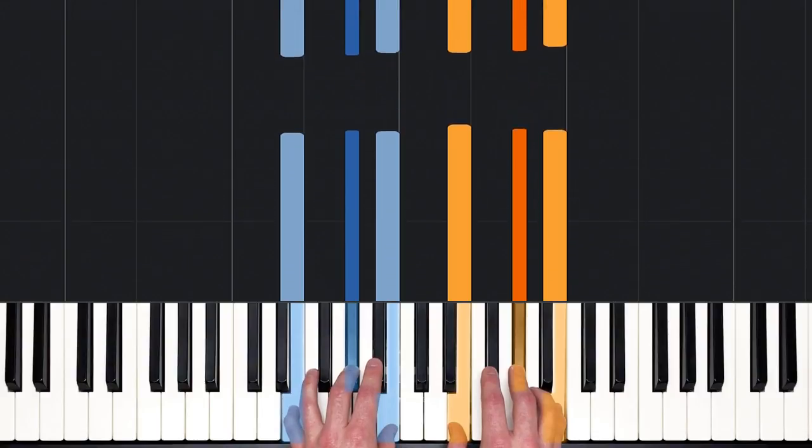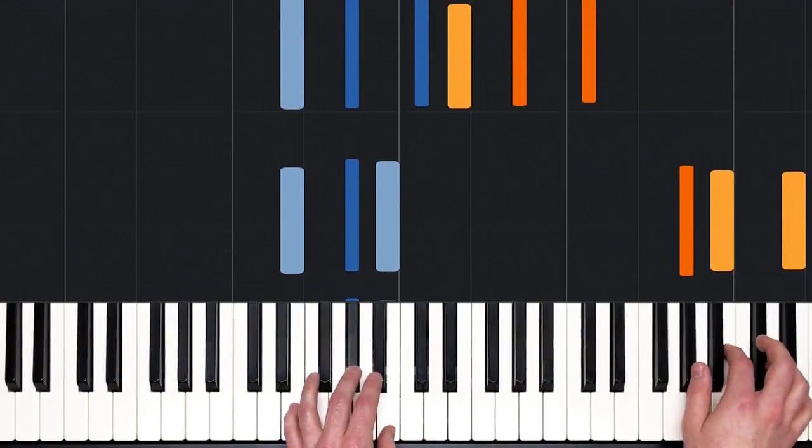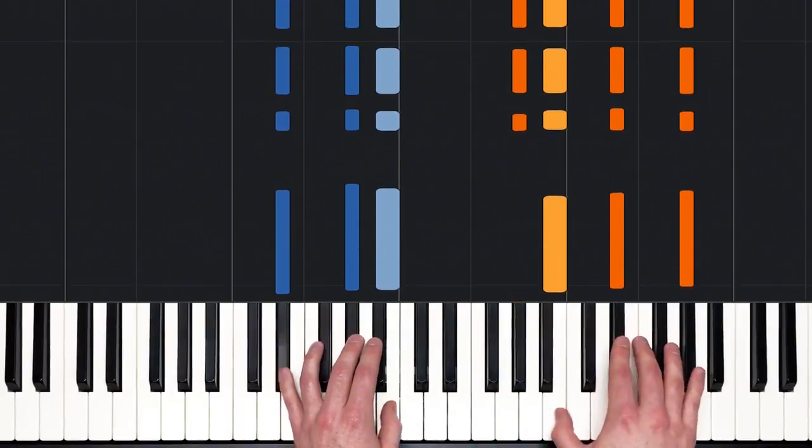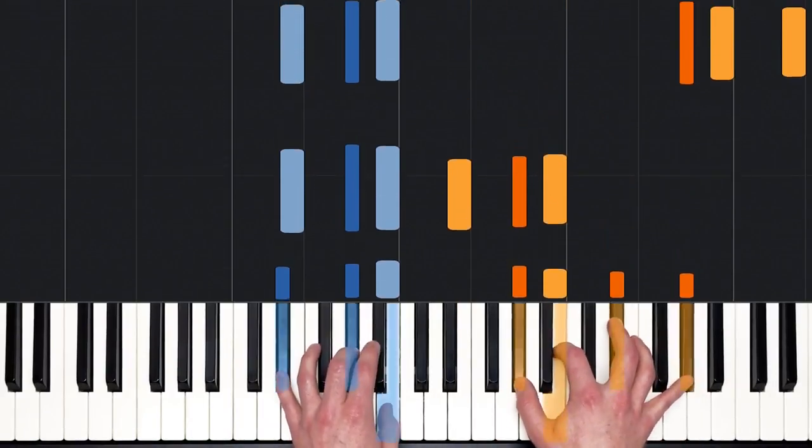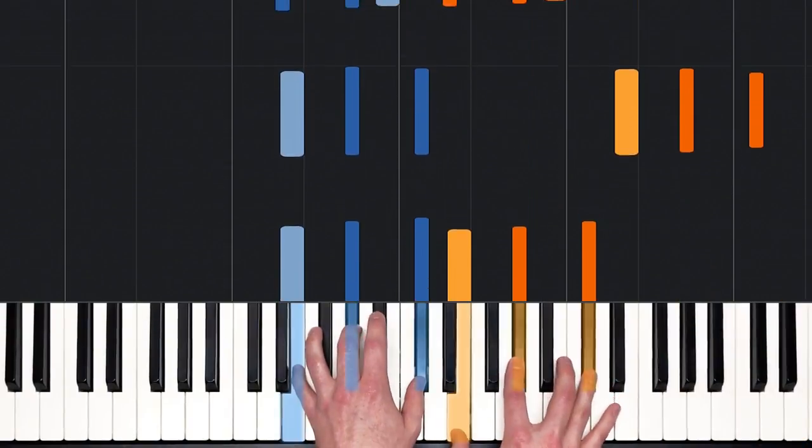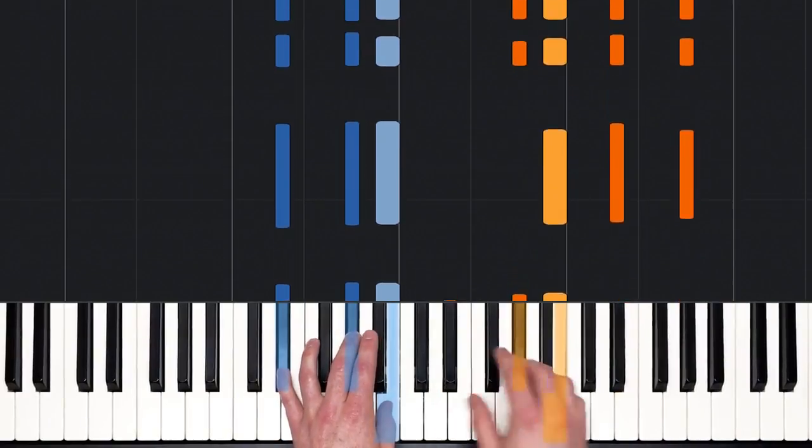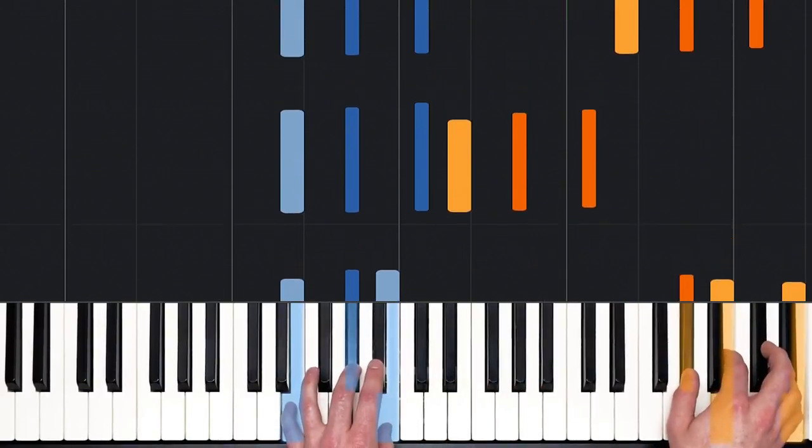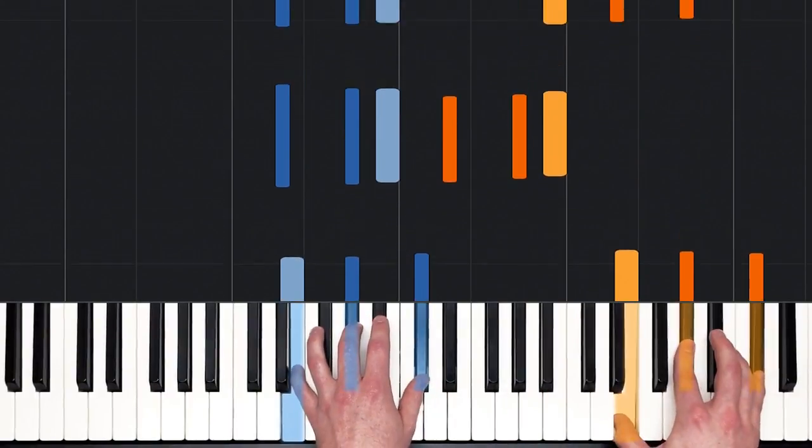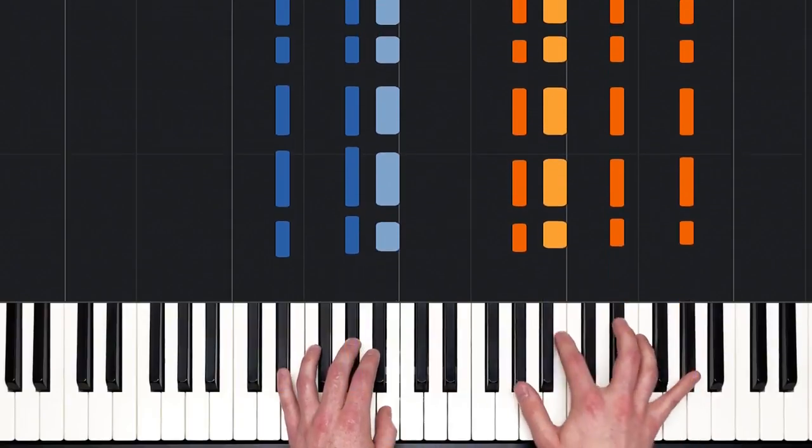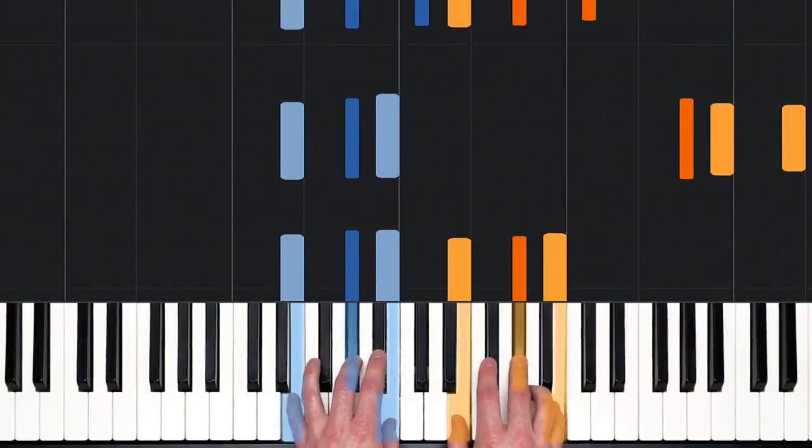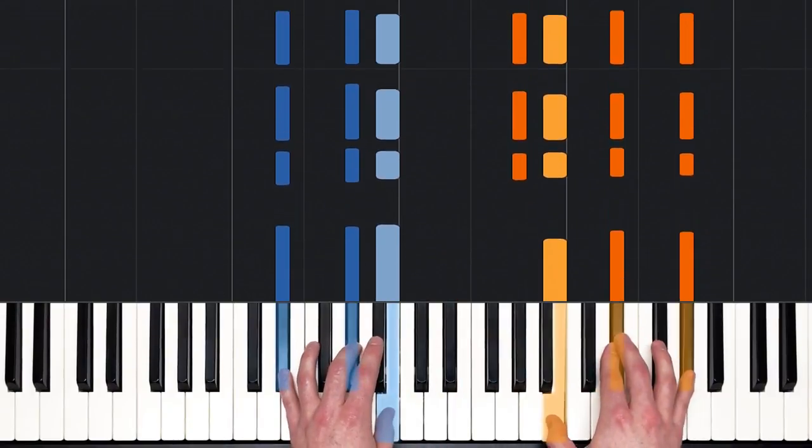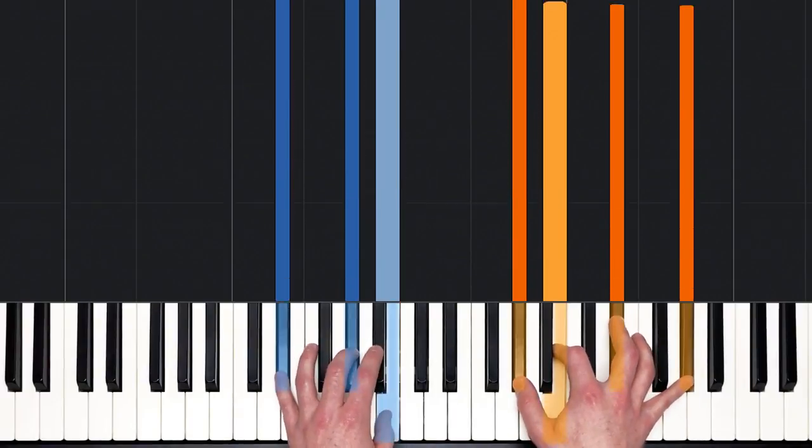So let's try this, okay? Let's try very slowly what I just did. Ready? Three, two, three, four. E and one, two, three, four. One, two, three, four. Again. A couple more times. Okay.